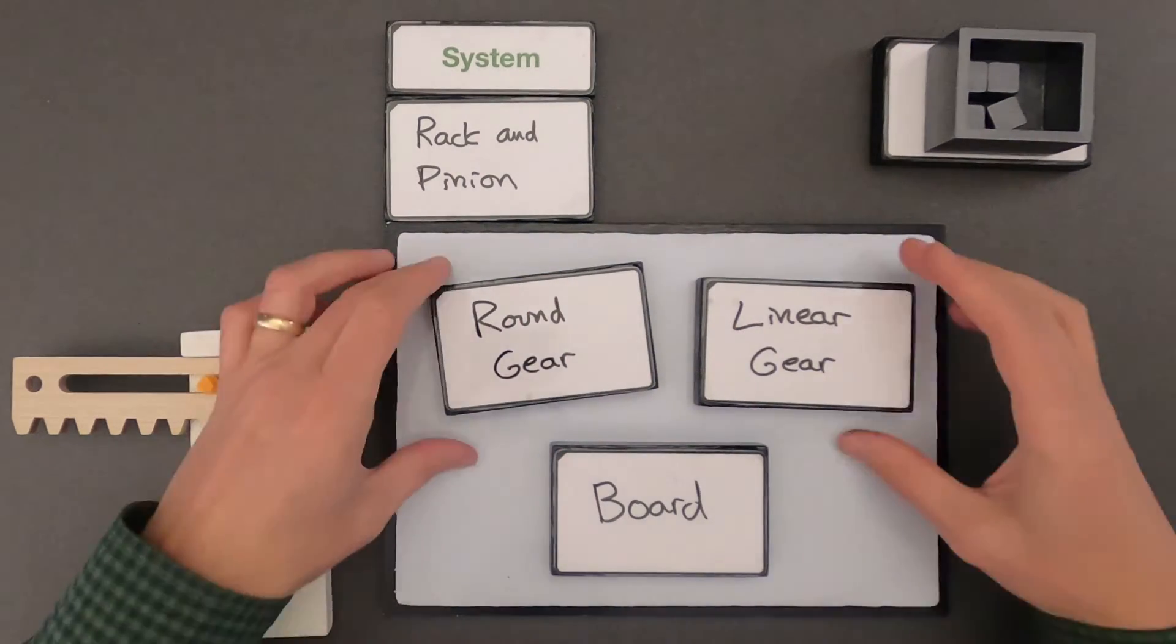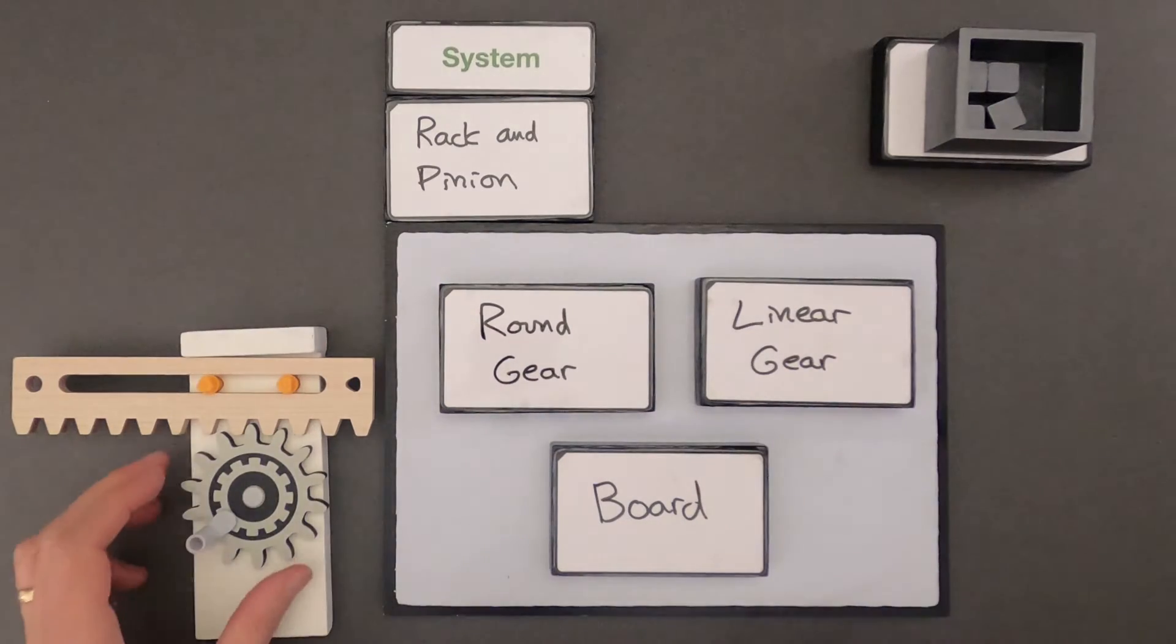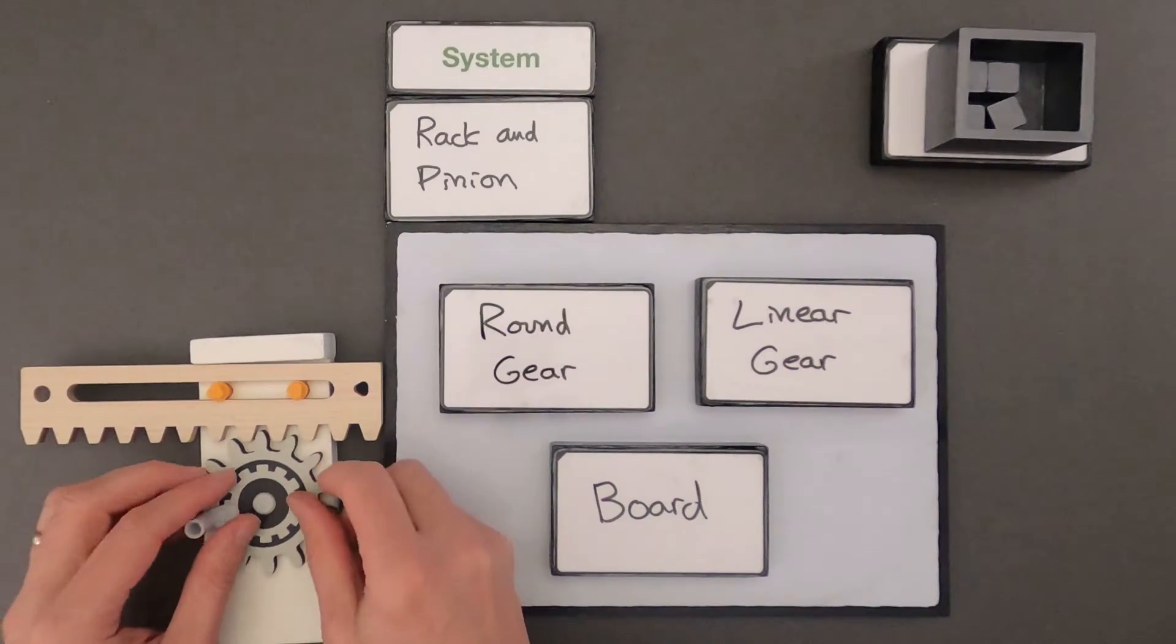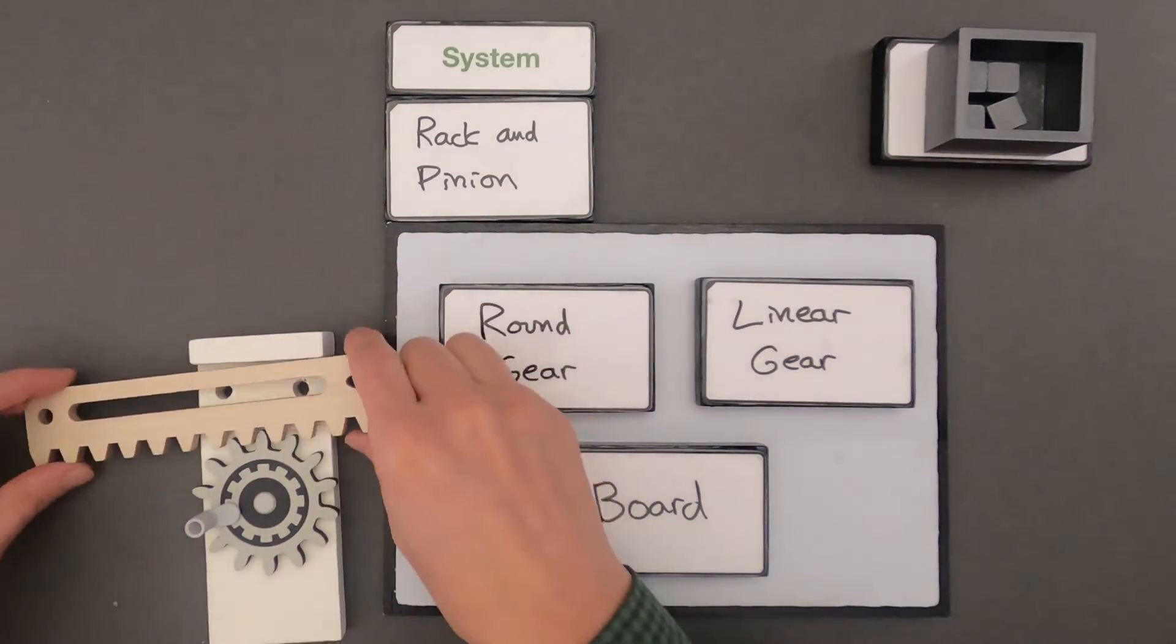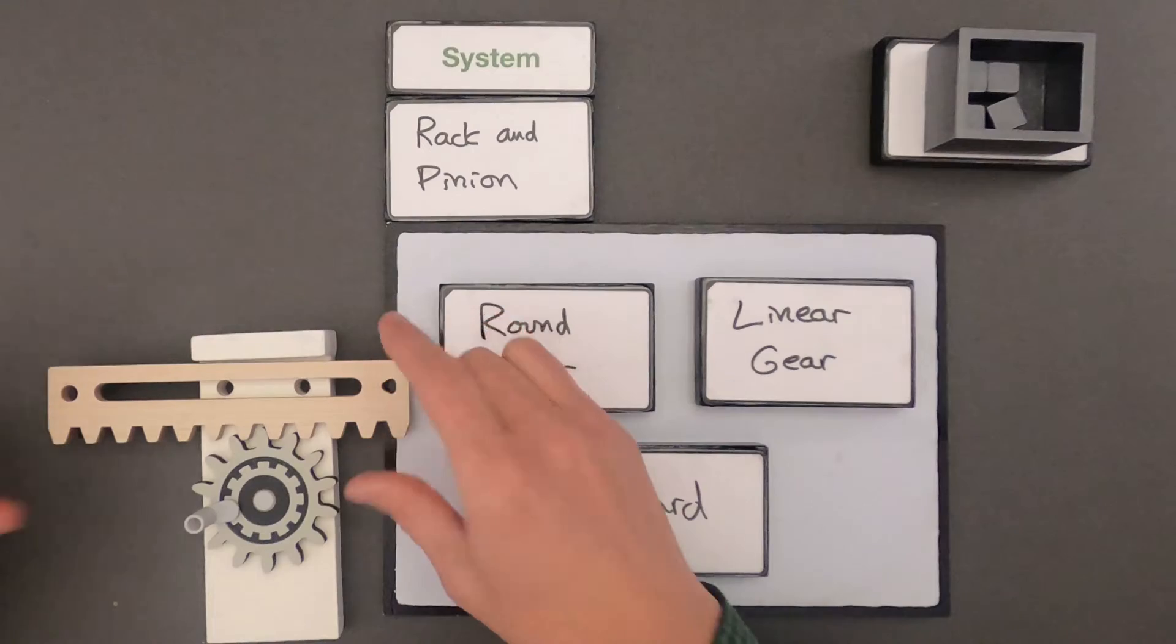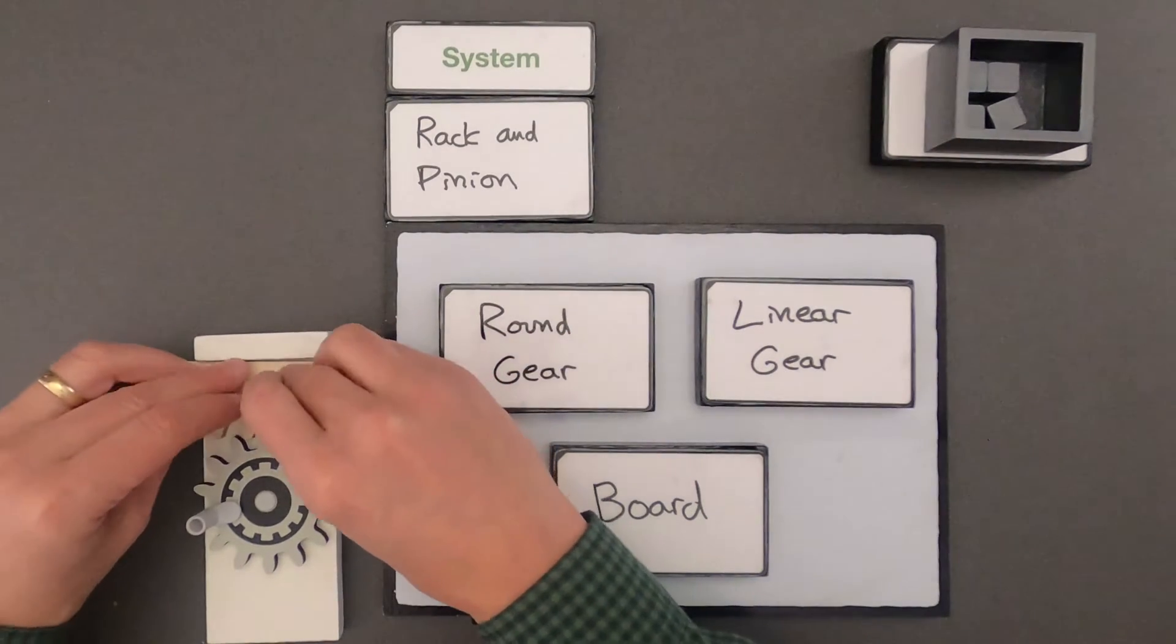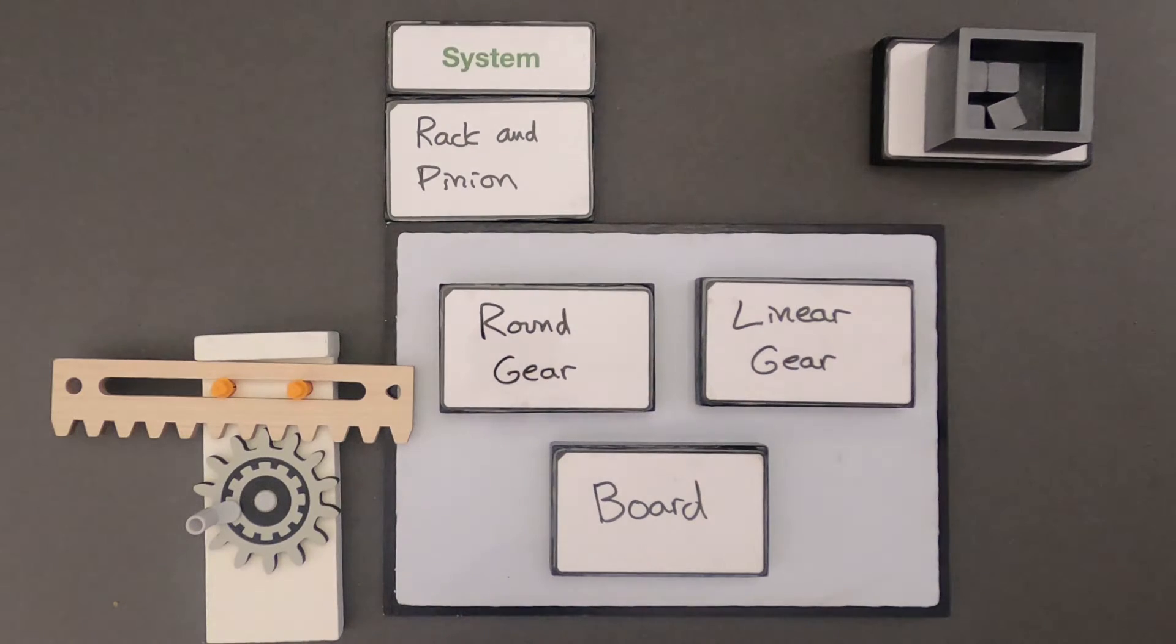Okay so the three parts that I see within this system are the round gear. So that's one part. The next part is going to be this linear gear. So that's going to be this wooden part. And then the final thing that I see is going to be the board and then these pins that are holding the linear gear in place. And so this is a way to represent a system made up of smaller systems.